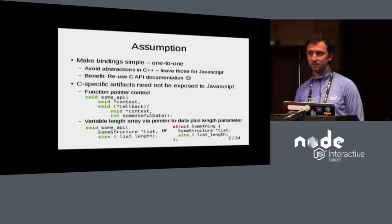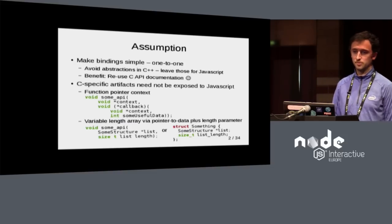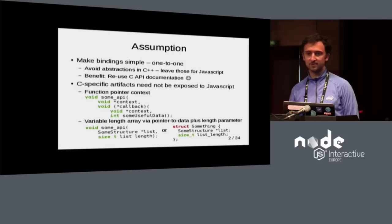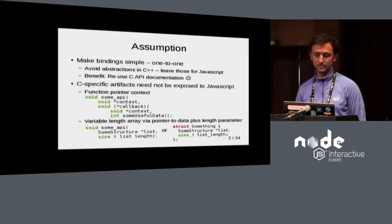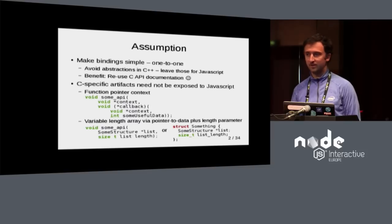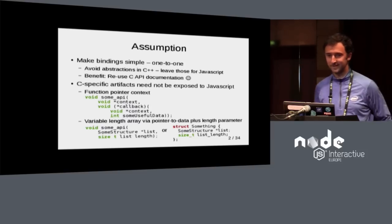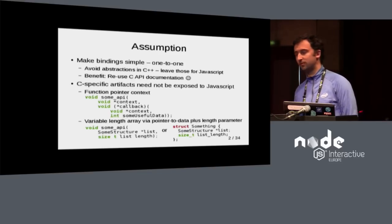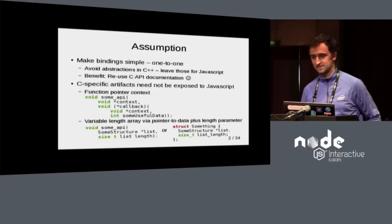There are some things you can avoid exposing to JavaScript that are specific to C. If you have a function that takes a function pointer in C, in most APIs it also takes a context, otherwise the function pointer is pretty useless for generic purposes. In JavaScript, context is not a problem — JavaScript is the king of context. You can just make a closure and call it a day, so you don't need to expose that to C.